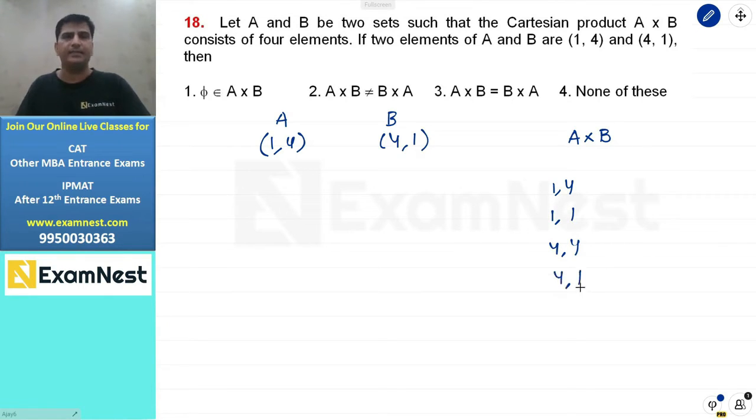What happens if we write B into A? So (4,1), (4,4) is our second, (1,1) is our third, and (1,4) is our fourth. So what we find is that A into B equals B into A. Third option.